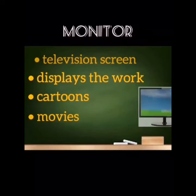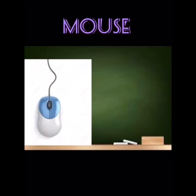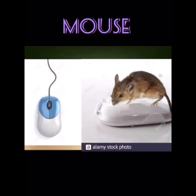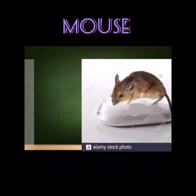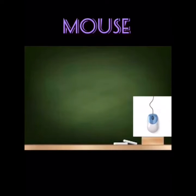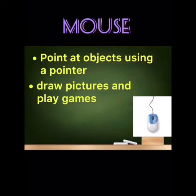The next part we are going to see is mouse. See the picture of mouse here — it is looking similar to the animal mouse, right? Both are looking similar, but they function differently. Both are having a tail, but their functions are very different. The tail of the computer mouse is connected to the CPU and looks like a cable. The first function of mouse is it will point at objects using a pointer. Whatever things you are seeing on the monitor, we can point at them using the mouse.